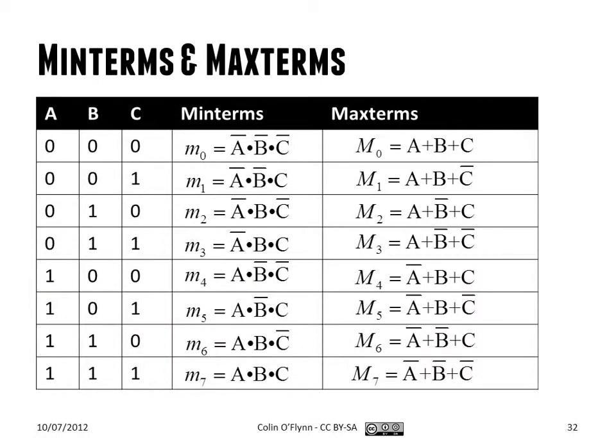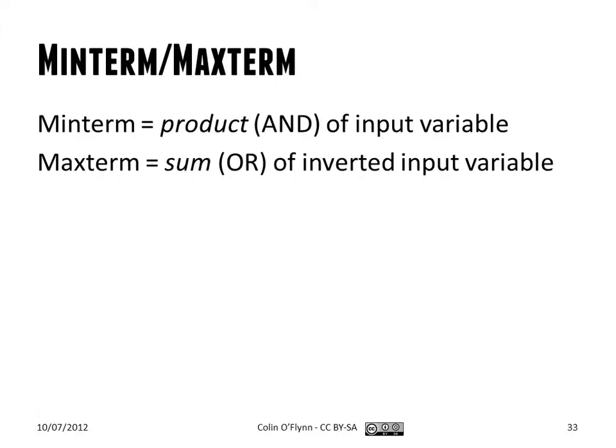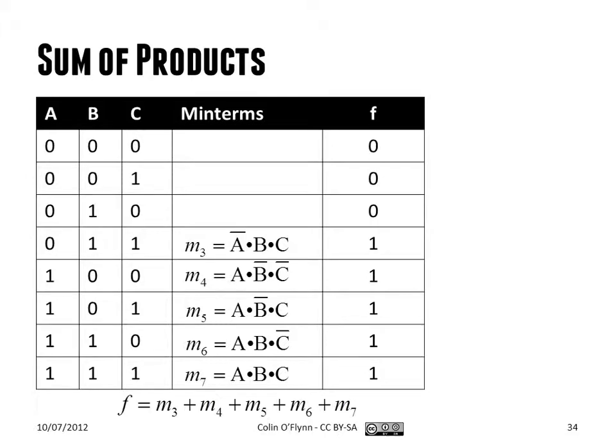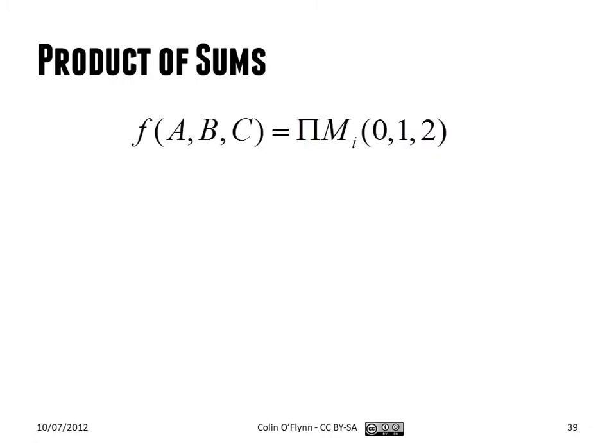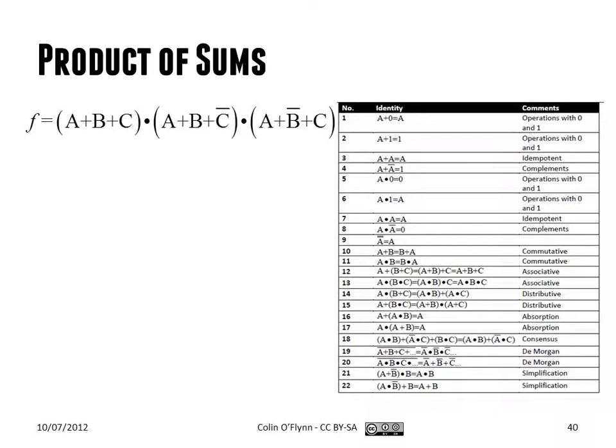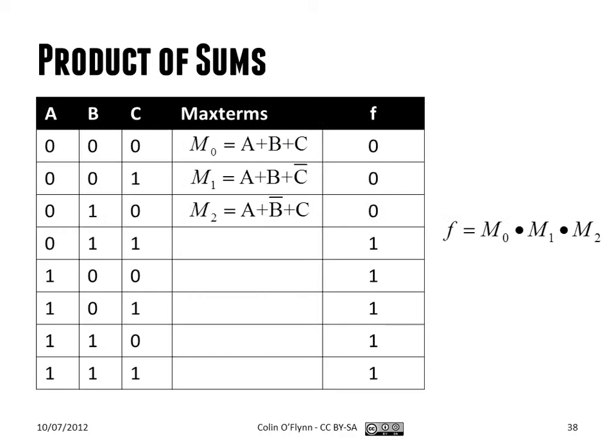The other way we can design it is using maxterms. With minterms, we're talking about the sum of products form, where we OR all the minterms together. With maxterms, we're talking about product of sum form, where we AND all of the terms. With maxterms, the difference is that when we write them out, we instead concentrate on the 0s, because each of the maxterms will be ANDed together, and we're going to insert 0s in one of these maxterms, which will make the whole thing equal to 0 for only the specific spots we require it.